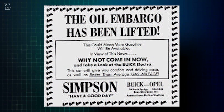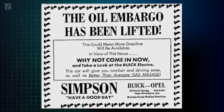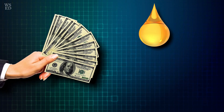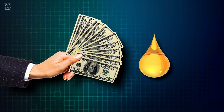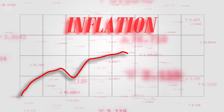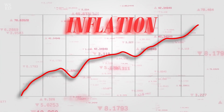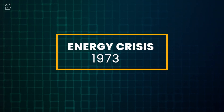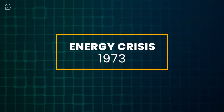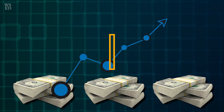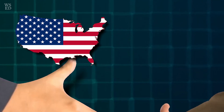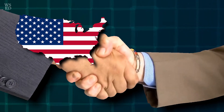OPEC eventually lifted the embargo in March 1974, but higher oil prices persisted, leading to an overall increase in inflation. Like most economic events, the 1973 energy crisis and subsequent inflation were caused by multiple factors, not just U.S. support for Israel.